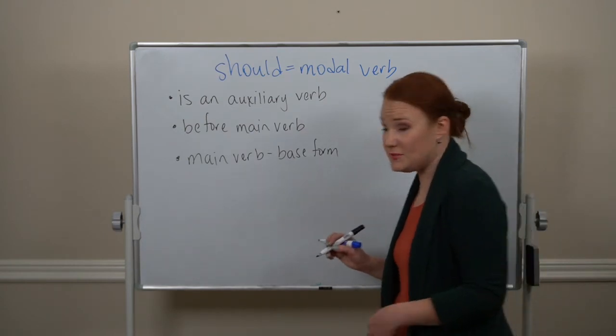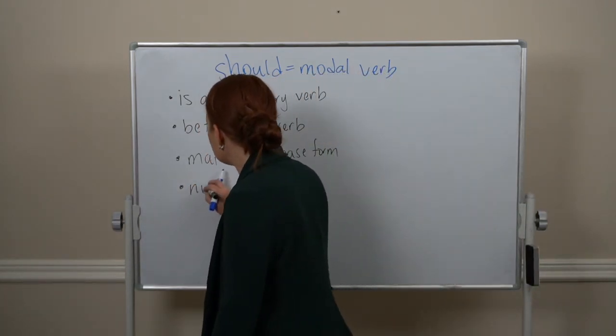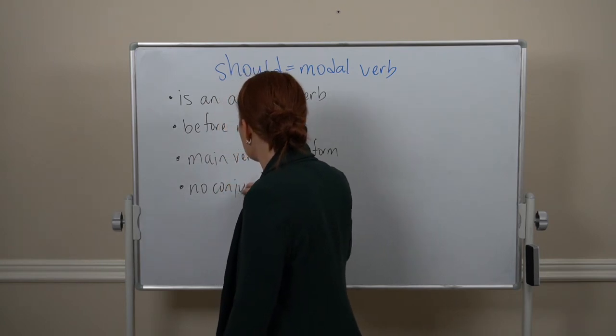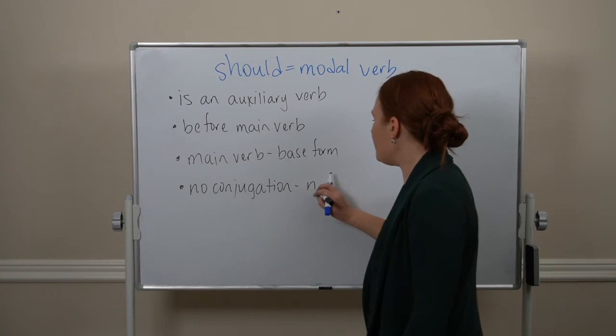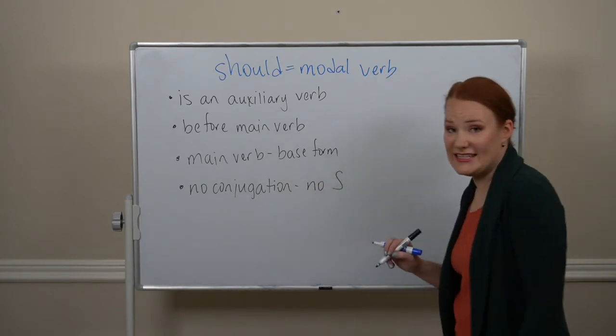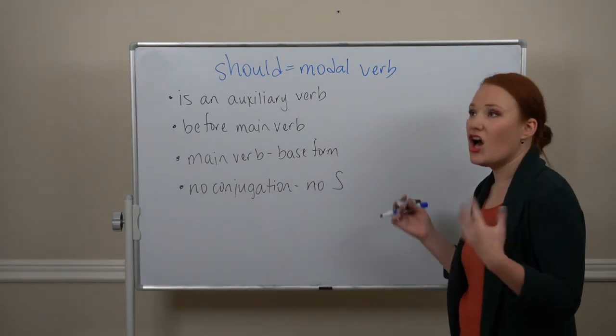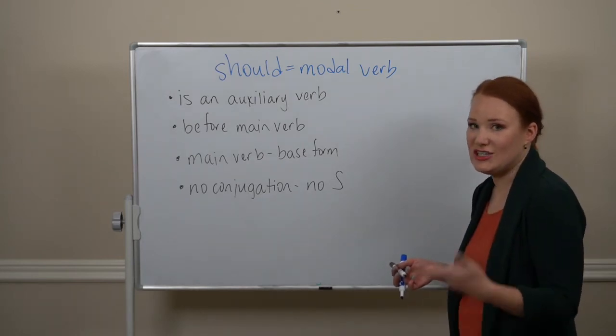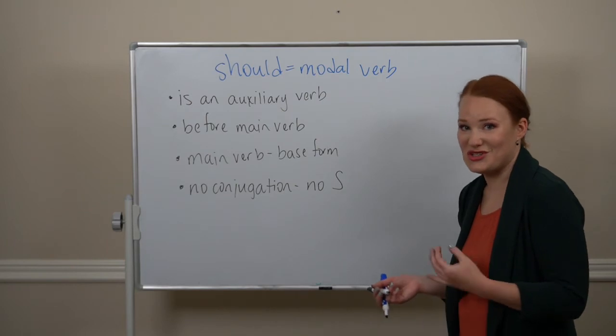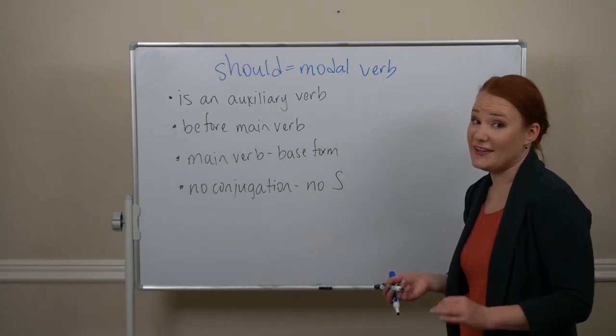Modal verbs are not conjugated. So that means no s ending for he, she, and it. All the subjects are the same. I should, you should, he should, she should, it should, we should, they should. No s endings.